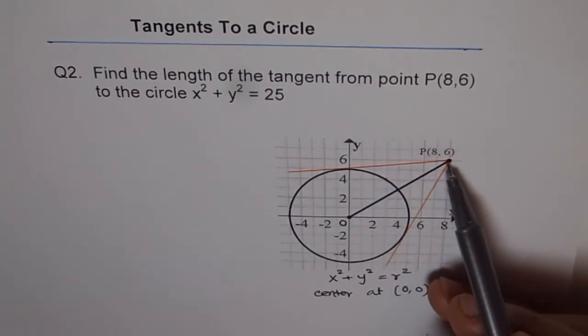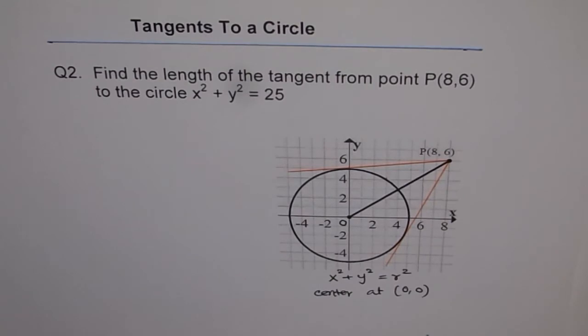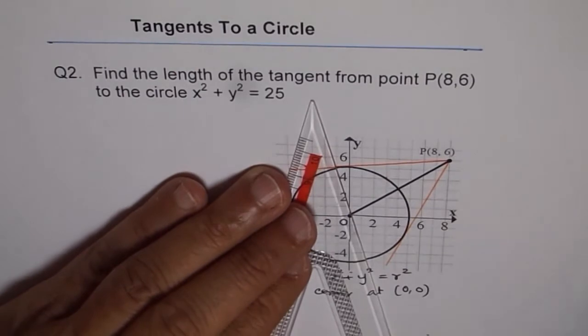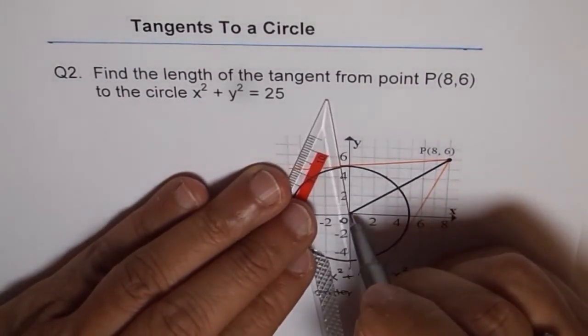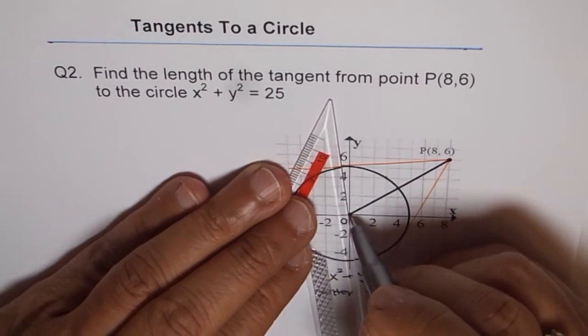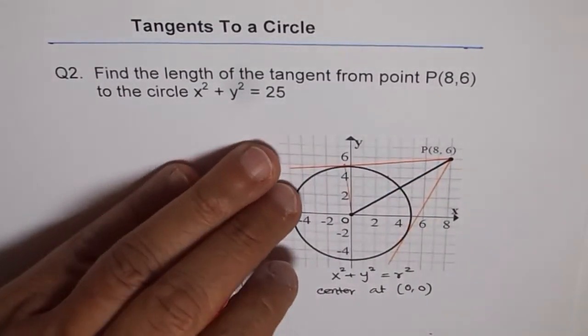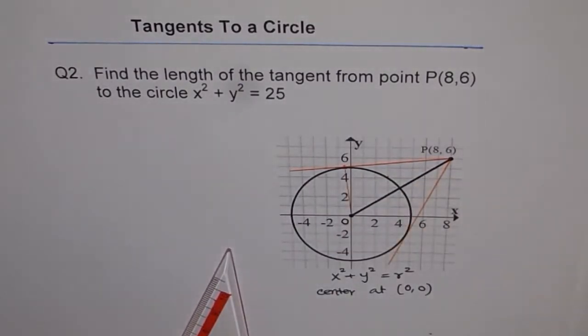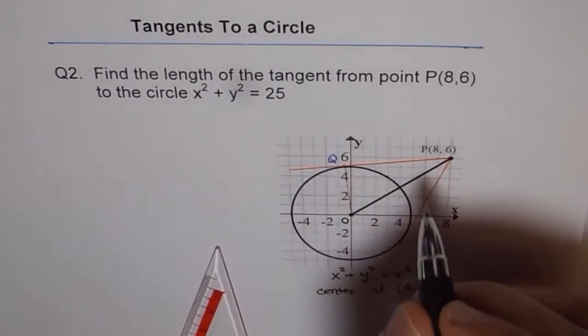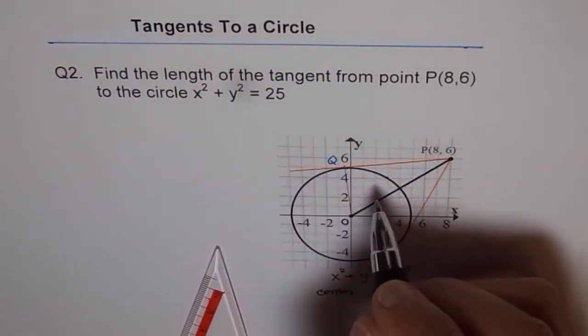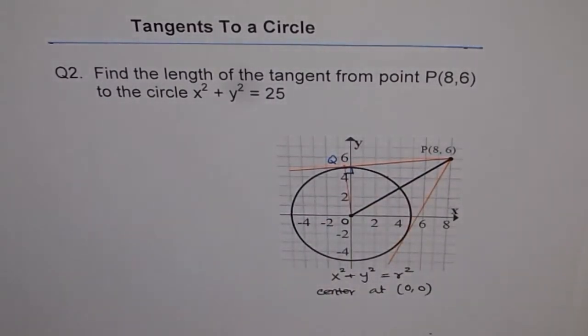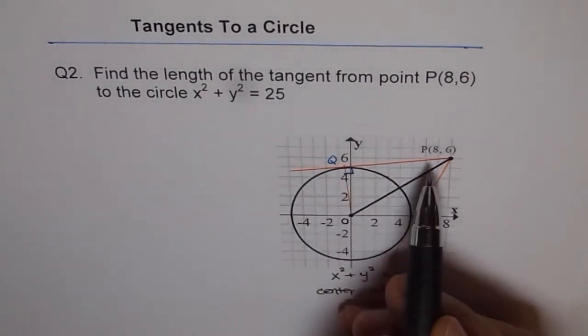Now, the question which we are working on is to find length of the tangent. So we already have this tangent. Let's say this is the point Q where it makes tangent with this circle. We'll join this with the center, so that becomes the radius. So what we have here is the point Q where the tangent touches the circle. Now, at that point, the radius will make 90 degrees with the tangent.